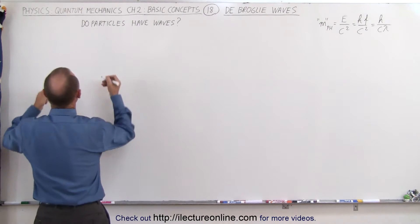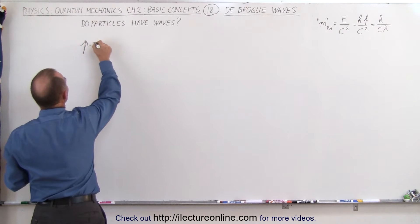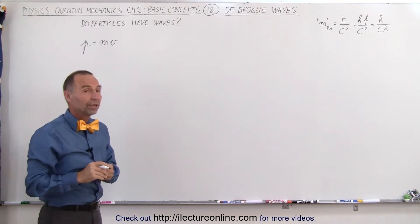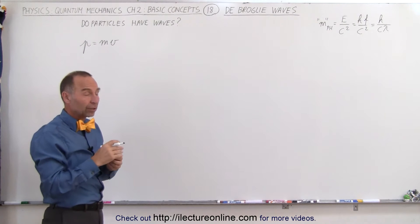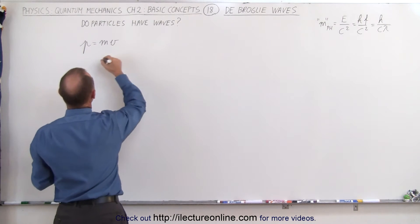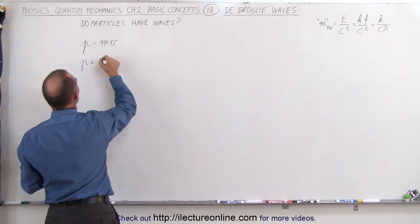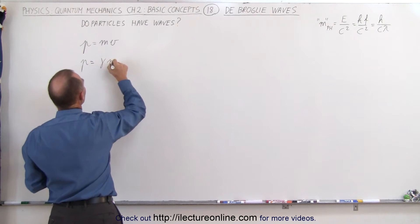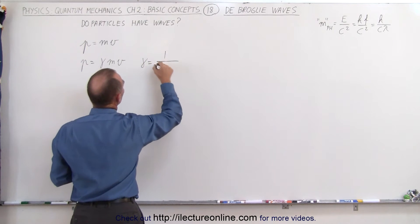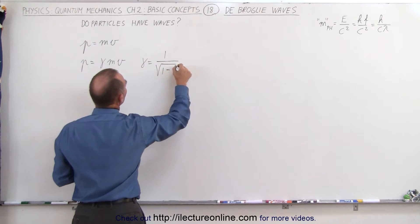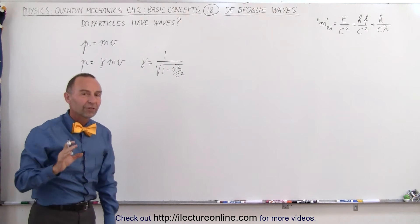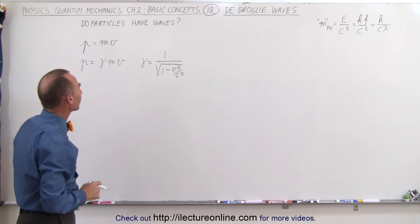First of all, we know that the momentum of any particle is equal to the mass times its velocity. Of course, if it's a particle that moves very fast, close to the speed of light, then we have to say that the momentum is equal to gamma times mv, where gamma is equal to 1 over the square root of 1 minus v squared over c squared. In other words, we have to take into account the relativistic effect of moving very fast.